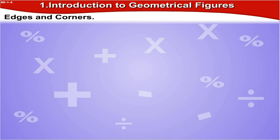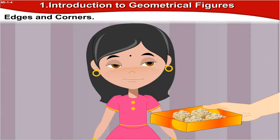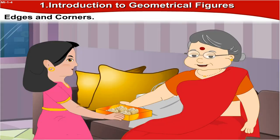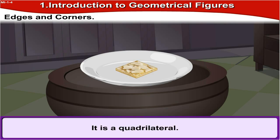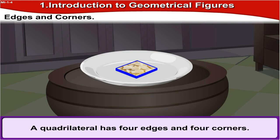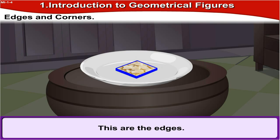Edges and corners. Sonu's grandma gave her this burfi. Look at the burfi. What is the shape of the burfi? Well yes, this piece of burfi is quadrilateral in shape. A quadrilateral has four edges and four corners. See, these are the four edges: one, two, three and four. And these are four corners: one, two, three and four.